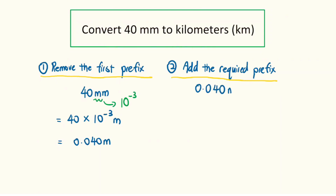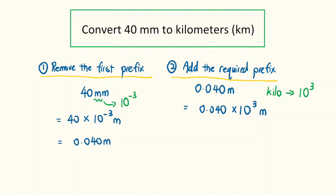Then next, we will convert 0.040 meters to kilometers. We need to add the required prefix, which is 'kilo', and kilo has a value of 10 to the power of 3. We create the value for kilo by multiplying 0.040 by 10 to the power of 3, and to balance it, we divide 0.040 by 10 to the power of 3. The 10 to the power of 3 and the meters are converted into kilometers. Using a calculator, 0.040 divided by 10 to the power of 3 gives 4.0 times 10 to the power of minus 5 kilometers.